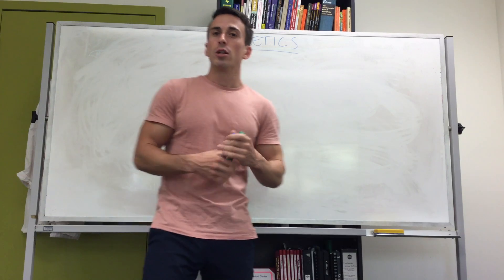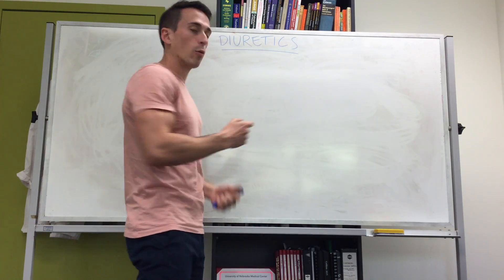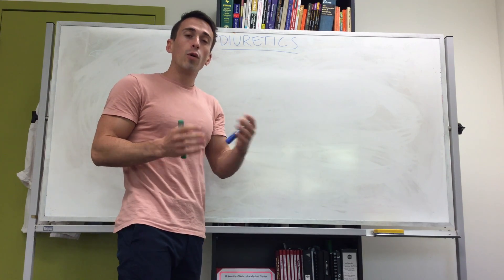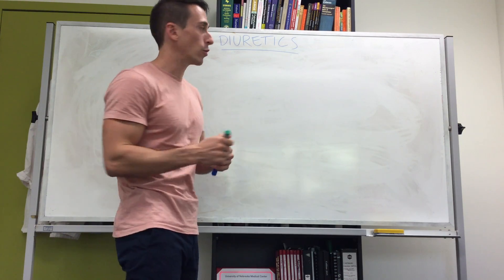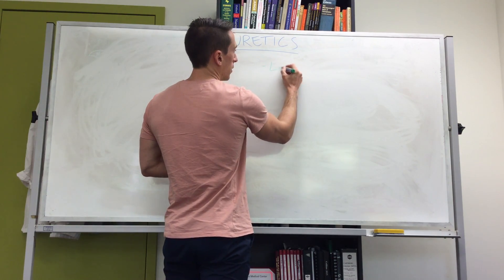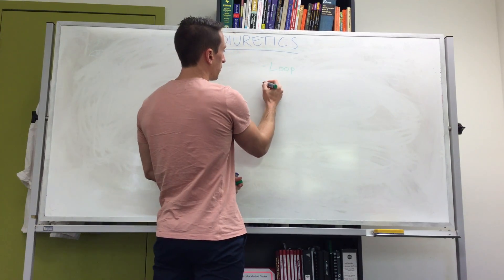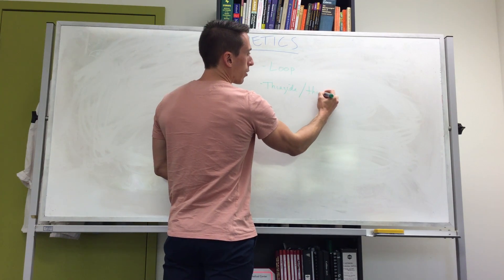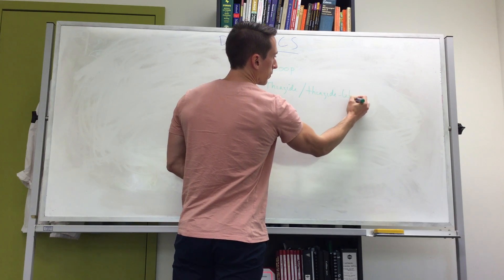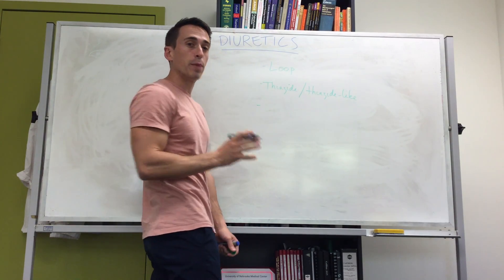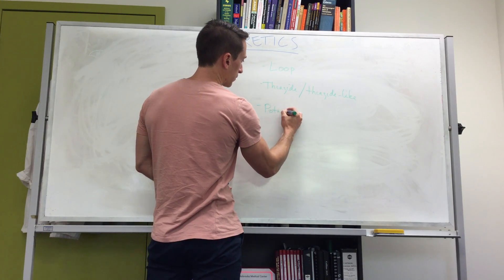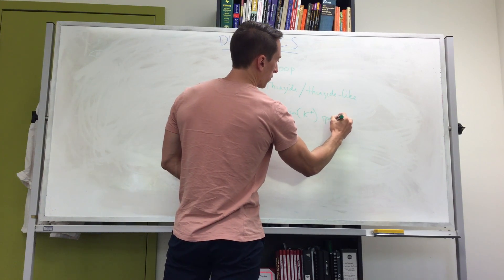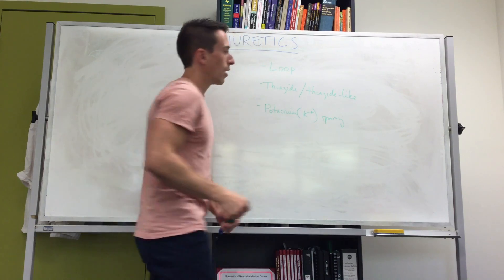First I want to talk about the three categories of diuretics. There are numerous categories, but I want you to remember these three in particular: the loop diuretics, the thiazide or thiazide-like diuretics, and what we call the potassium-sparing diuretics.